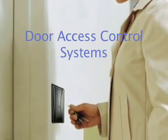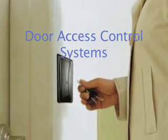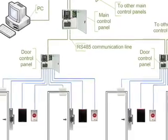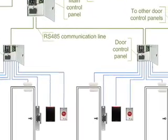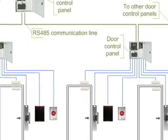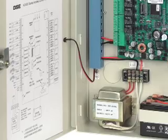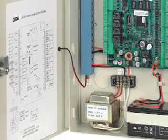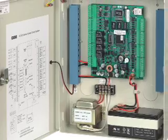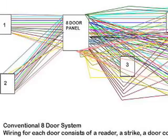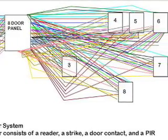Now let's take a look at door access control systems. Historically, the door readers were connected back to a door control panel. These readers were usually complicated and handled a fixed number of readers. It required lots of wires to connect everything together.